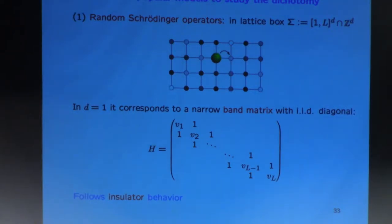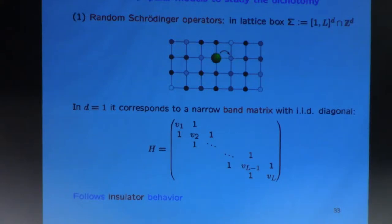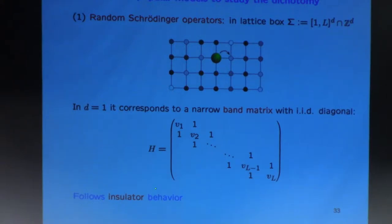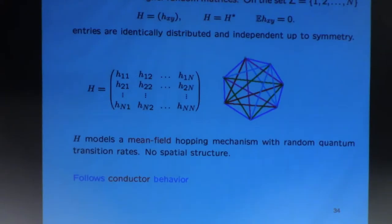So it's very far from our Wigner matrix. It also has the feature that the ones are there, so it's not really centered — the random variables in this matrix are not centered. It also has a part which is actually deterministic and non-zero. The basic fact is that in one dimension, the random Schrödinger operator follows the insulator behavior. So that's one model.